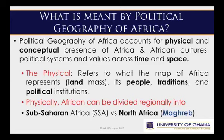First of all, let's ask the question: what is meant by political geography of Africa? The political geography of Africa accounts for the physical and conceptual presence of Africa and African cultures, political systems, and values across entire time and space. To elaborate further, the physical means or refers to what the map of Africa represents — that is the land mass, its people, traditions, and the political institutions.